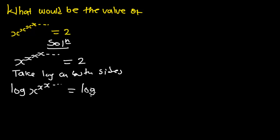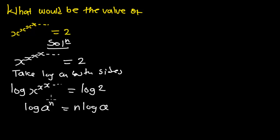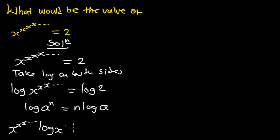This is equal to log of two. Now, using the property that log of a to the power n equals n multiplied by log of a, we can bring the exponent in front of the logarithm. So we have x to the power x to the power x, continuing to infinity, multiplied by log of x, equal to log of two.